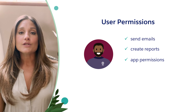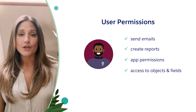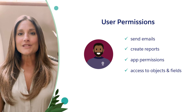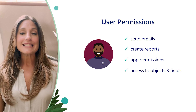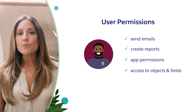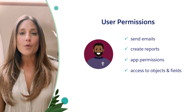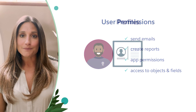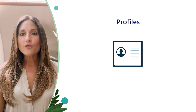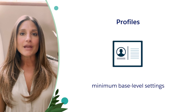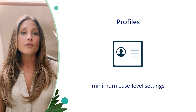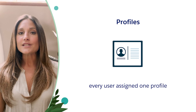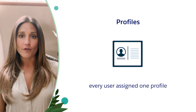This also includes access to objects and fields. So what should we be using, and how should we use these different options together to better control permission management for our users? Let's start with profiles. The profile provides a user's minimum base level settings and permissions to perform different functions, and every user is assigned exactly one profile.